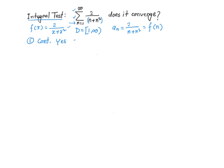Number two: is it positive? Of course it is positive. 2 over x plus x squared is always going to be positive on the interval 1 to infinity. So that is also yes.